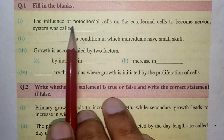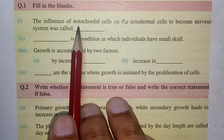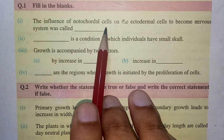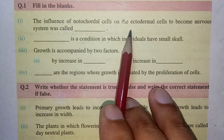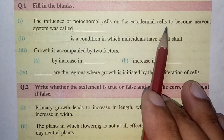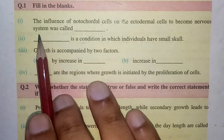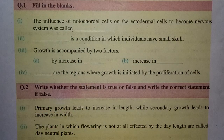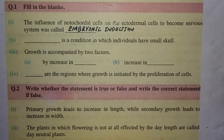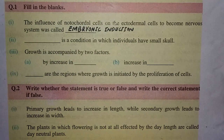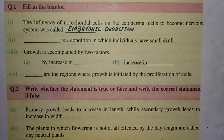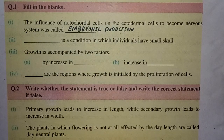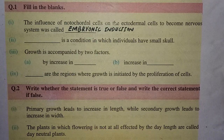The influence of notochordial cells on the ectodermal cells to become the nervous system was called embryonic induction. So let's move toward the second filling the blank.